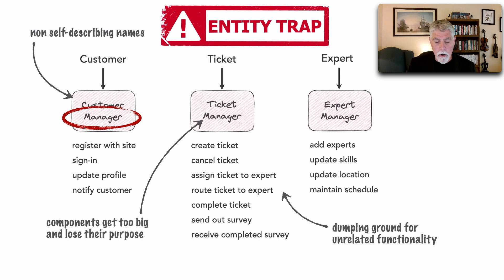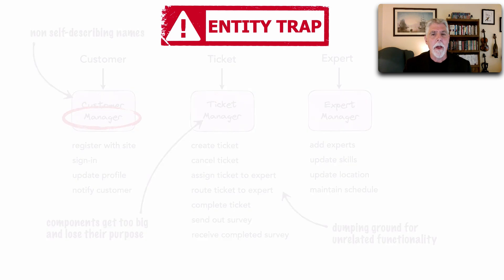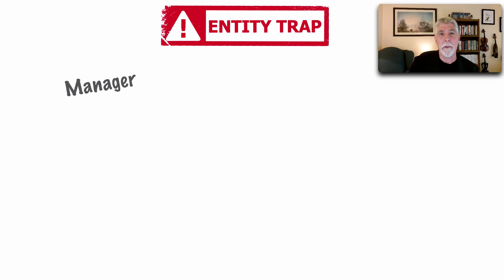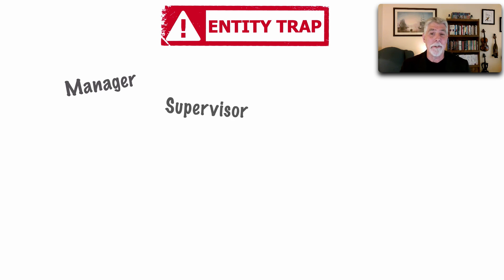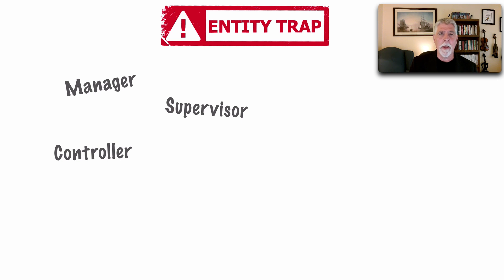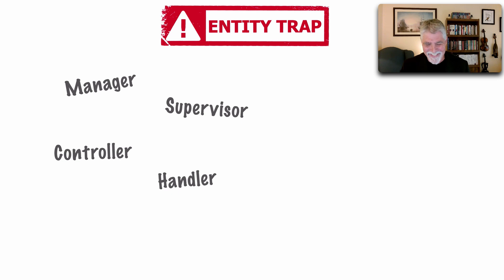It turns out that the word 'manager' is the problem. How do we know if we're in the entity trap? Using words like 'manager' to describe a component is a warning sign — the Survey Manager: what does it do? It manages surveys, I guess. 'Supervisor' is another word that might indicate you're in the entity trap. A Ticket Controller — what does that do? It controls tickets, but it doesn't describe what it actually does. 'Handler' is another common one — a Customer Handler. And 'helper' is another word to describe an architectural component that might tell you you're in the entity trap.